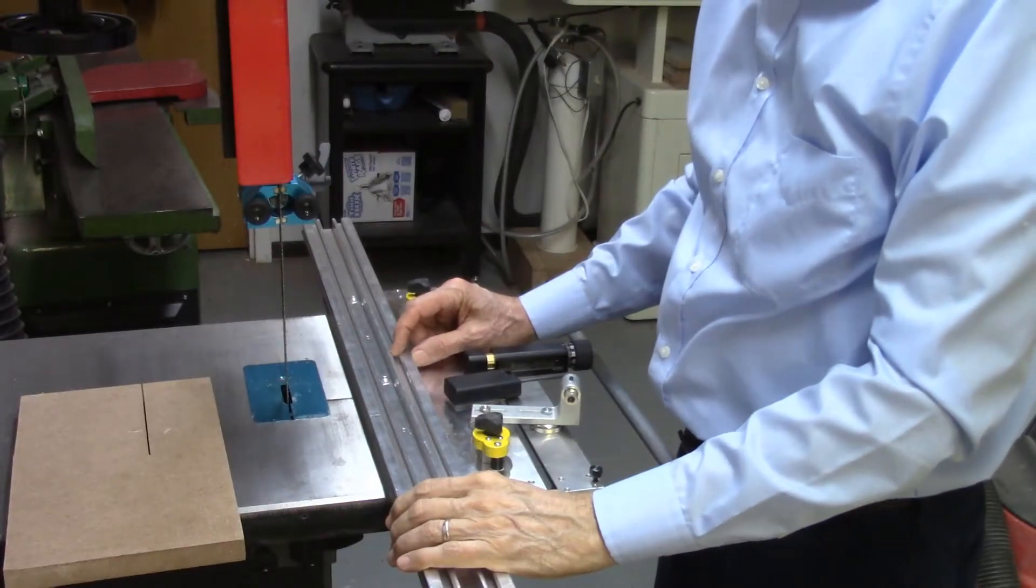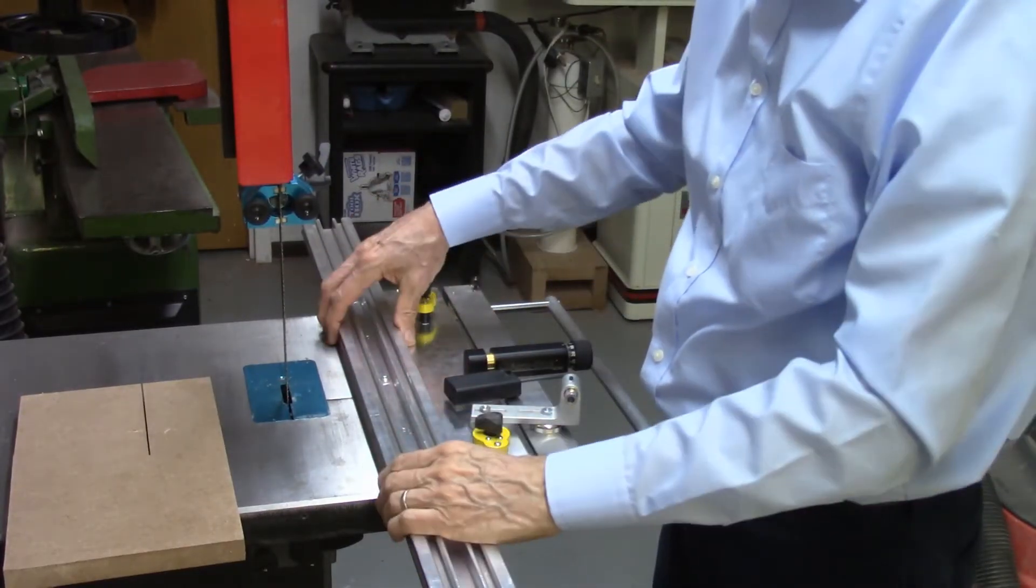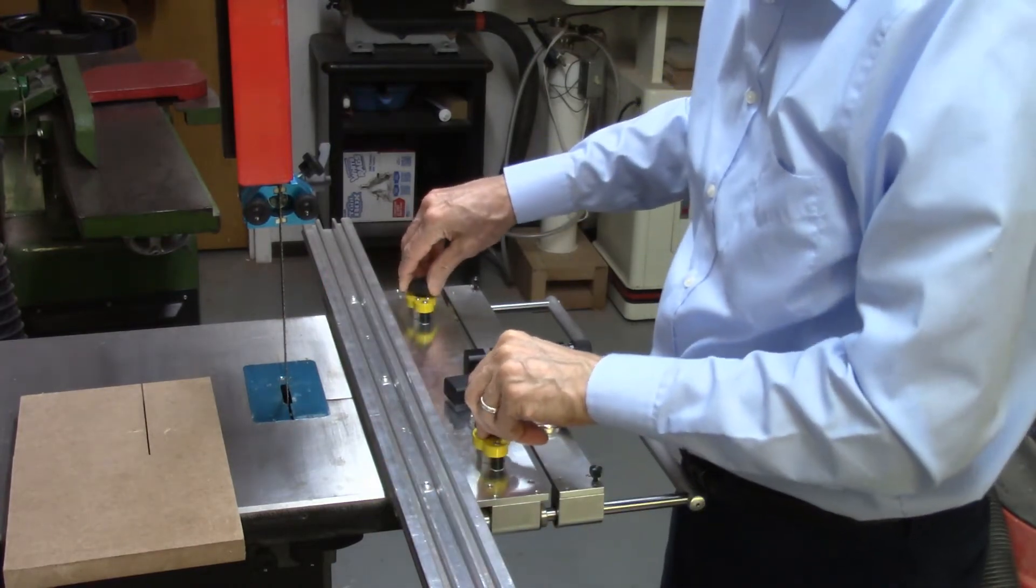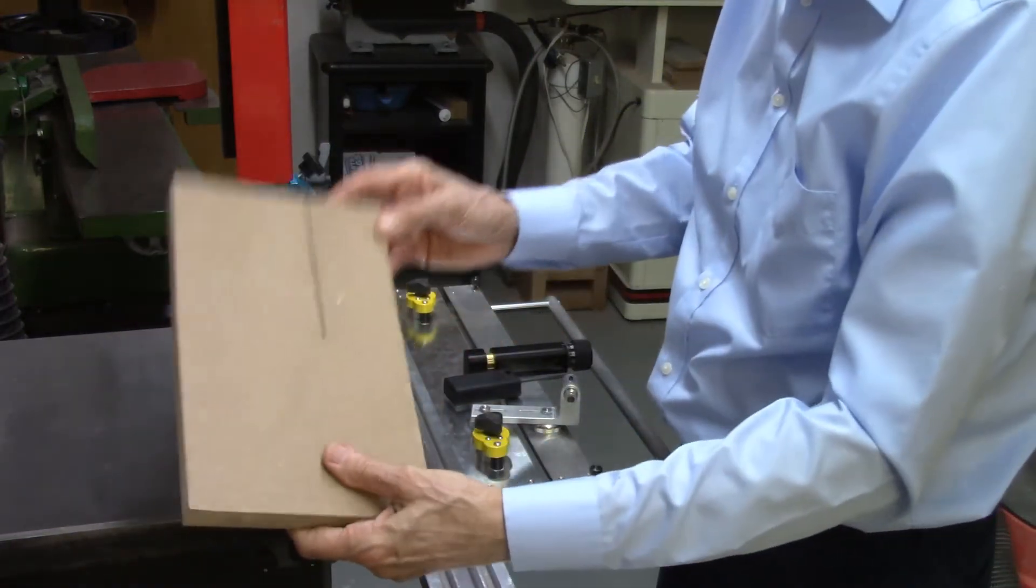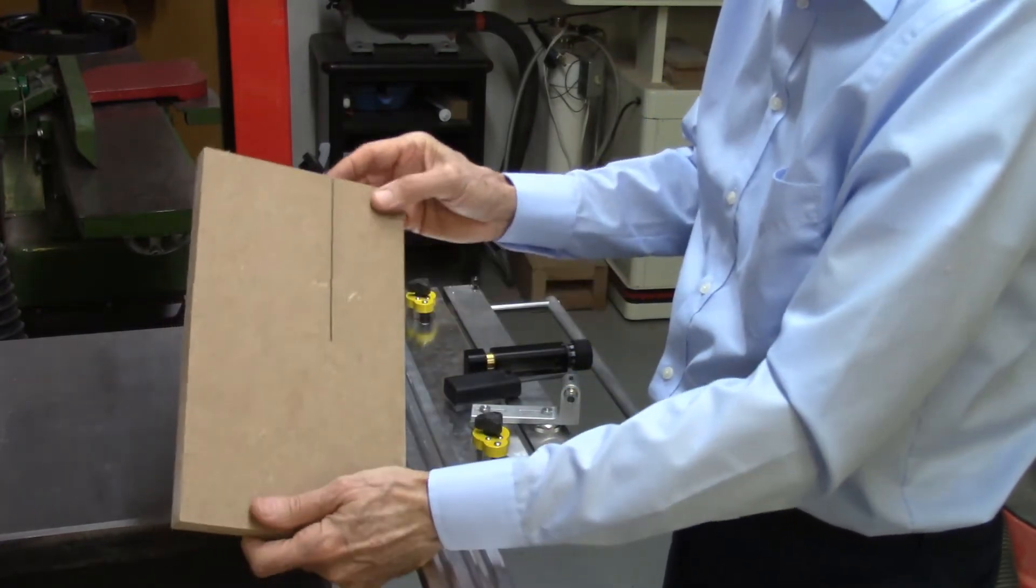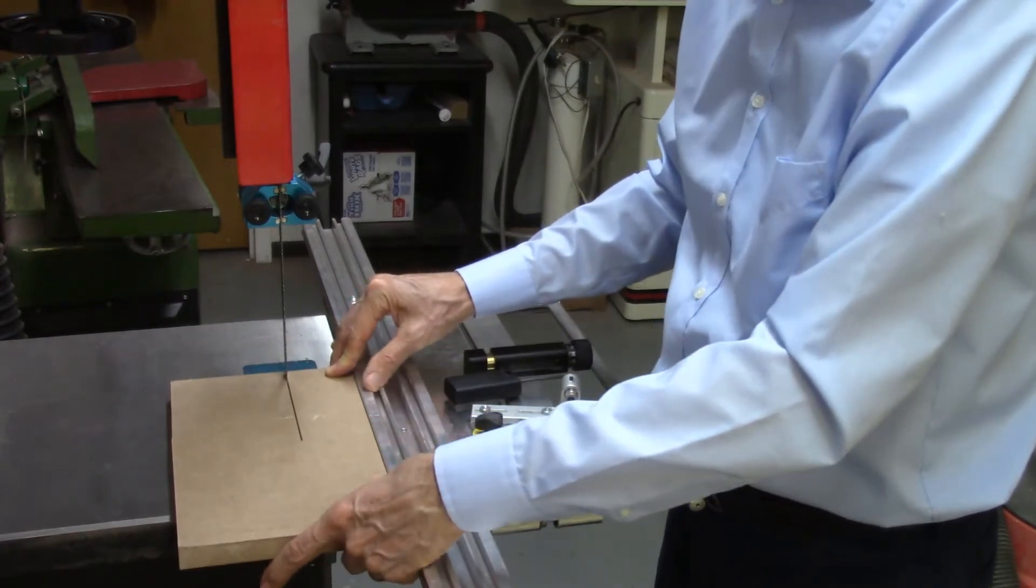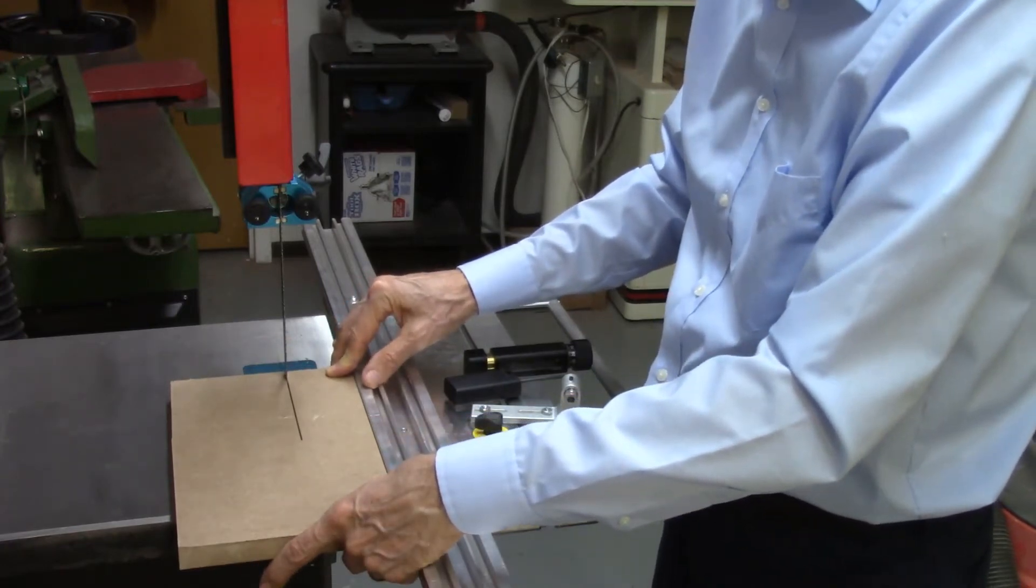To begin the installation of the bandsaw laser system, I mounted my Accu-Slice table and rail to my bandsaw, locked it in place, and I took a piece of scrap wood and cut halfway through this board on my bandsaw just to create a line, a straight parallel line that I used to align my bandsaw laser beam in the next couple steps.